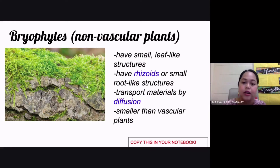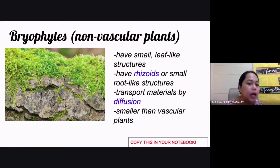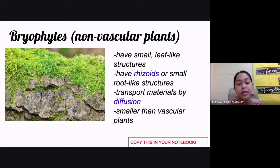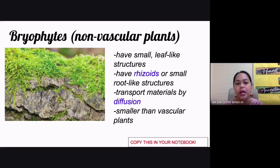Diffusion is the movement of materials from an area of higher concentration to an area of lower concentration. Because bryophytes lack xylem and phloem, they must stay very close to the ground and tend to grow smaller than vascular plants. Examples are mosses and liverworts.